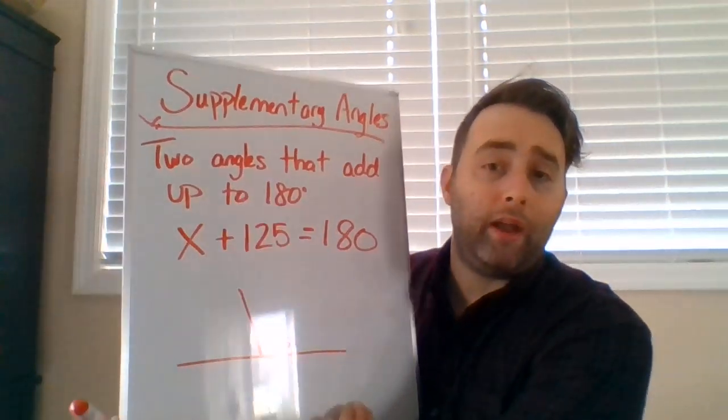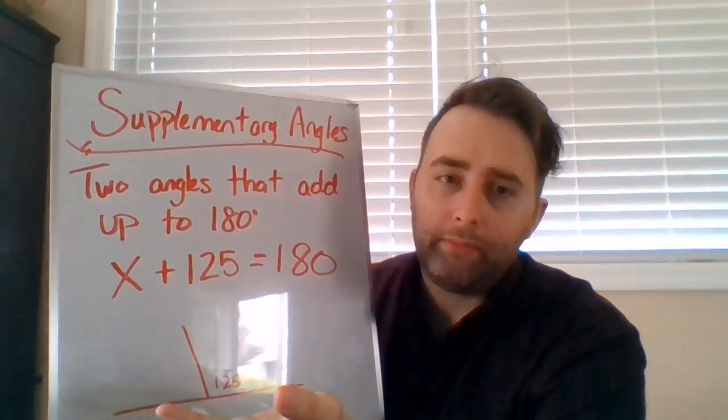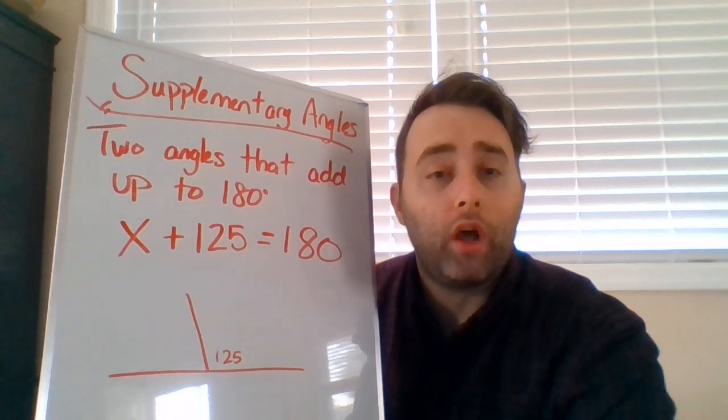Now supplementary, same thing, just now we're talking about 180, the full distance across. In fact, you know what? I will show an example of that here. Supplementary. Supplementary angles. Two or more. It could be more, but I'm leaving it at two. Two angles that add up to 180.